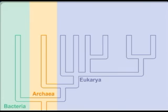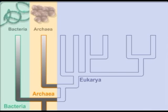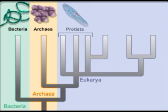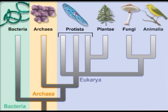Bacteria and archaea are similar in cell structure and are referred to as prokaryotes. These two groups can be distinguished by a number of important characteristics. All higher organisms — protista, plants, fungi, and animals — share a common cell structure and are referred to as eukaryotes.